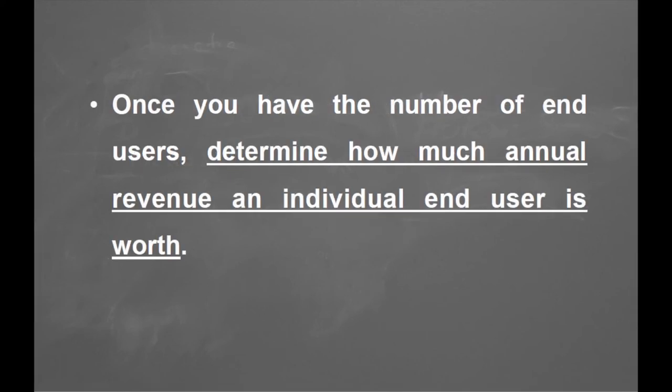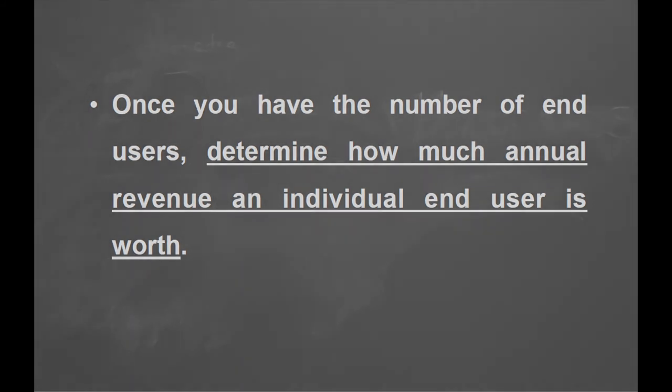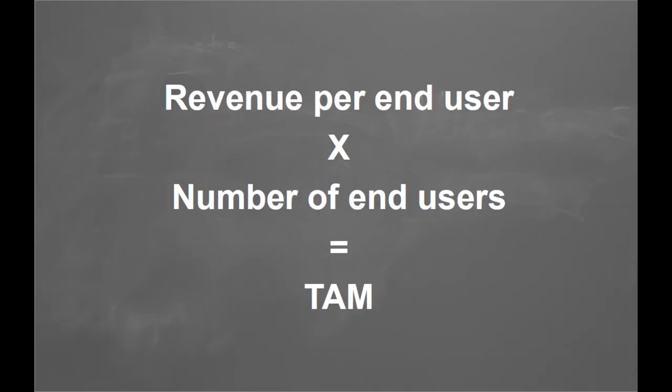Once we've counted the number of users out there who fit our end-user profile — that homogenous group — we determine how much they spend on average per year. We multiply the revenue per end-user by the number of users, and that gives us the TAM. Pretty straightforward.